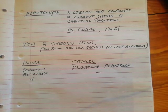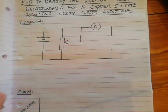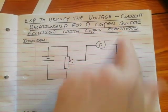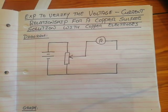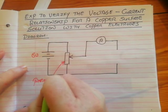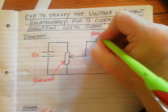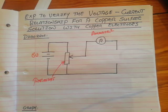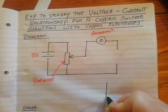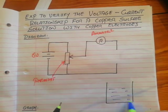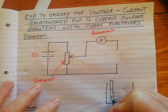Now we're going to look at the actual experiment: to investigate the voltage-current relationship for a copper sulfate solution with copper electrodes. We've got the exact same diagram as before — we've got our battery, we've got our rheostat to vary the voltage, we've got our ammeter to measure the current. What is missing is the copper sulfate solution and the voltmeter. So I'm just going to draw the copper sulfate solution here, and we're going to do it in blue because copper sulfate is blue. And here we're going to put our two electrodes.